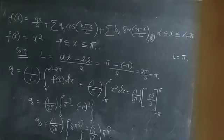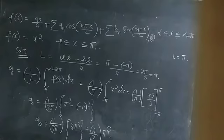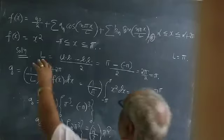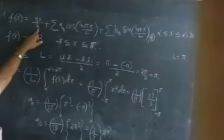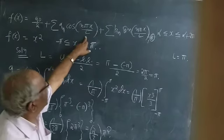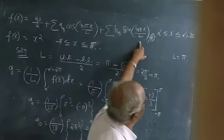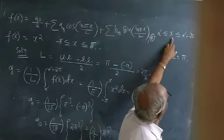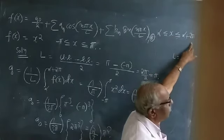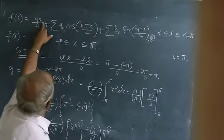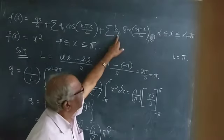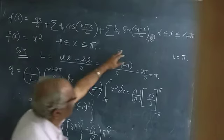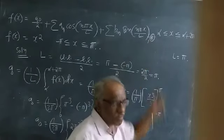Today I am talking about the Fourier series with regard to some problems. In the last class I have already explained the introduction of the Fourier series. So given a function f(x), if we can write it in the form a₀/2 plus sigma, then we find the values of a₀, aₙ, and bₙ. After finding those values, we substitute them in, and the problem is finished.